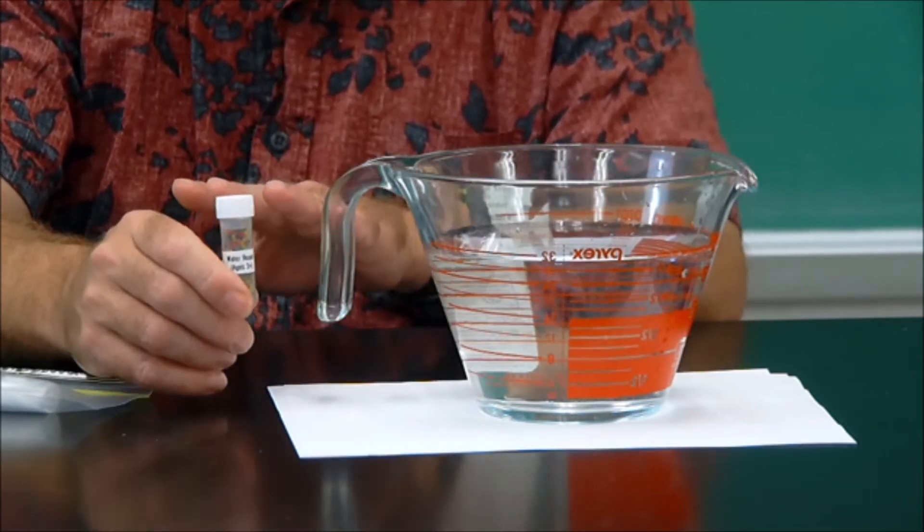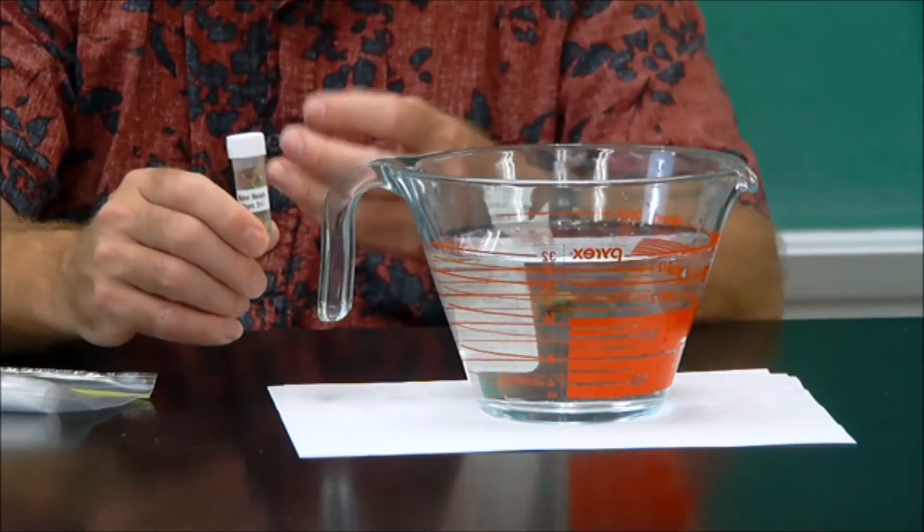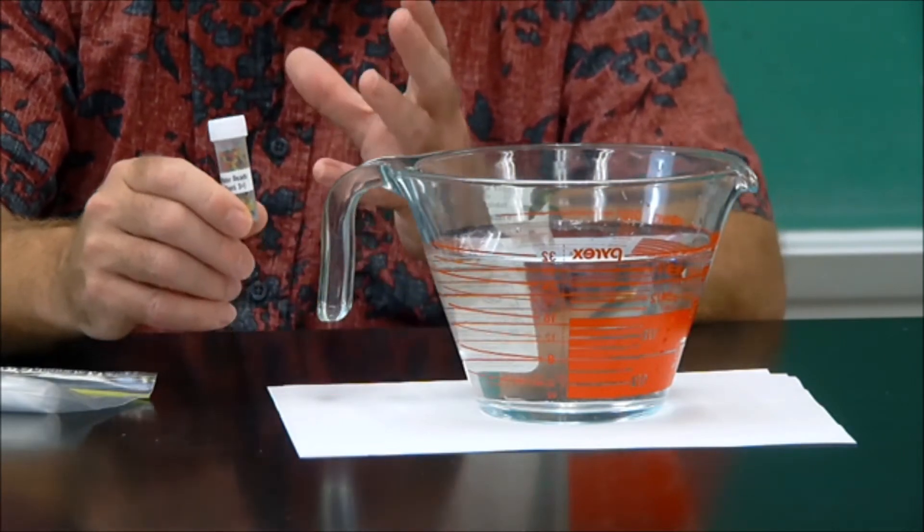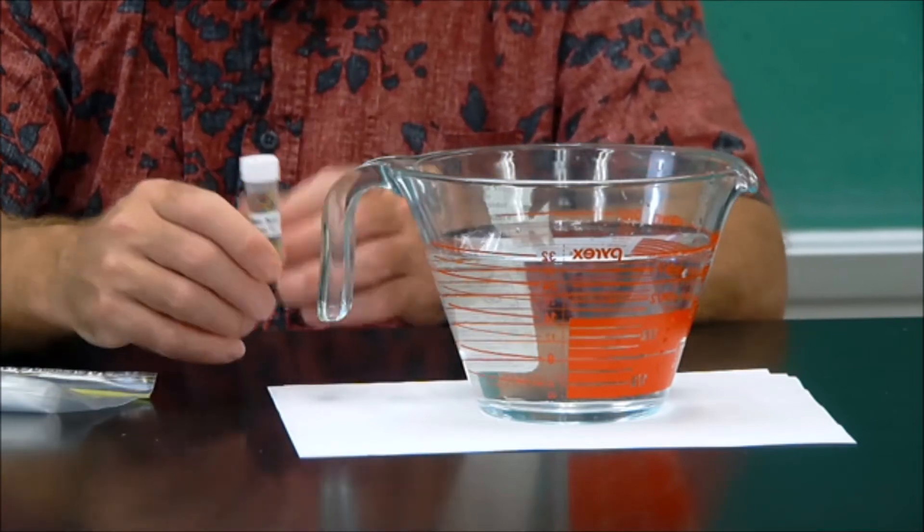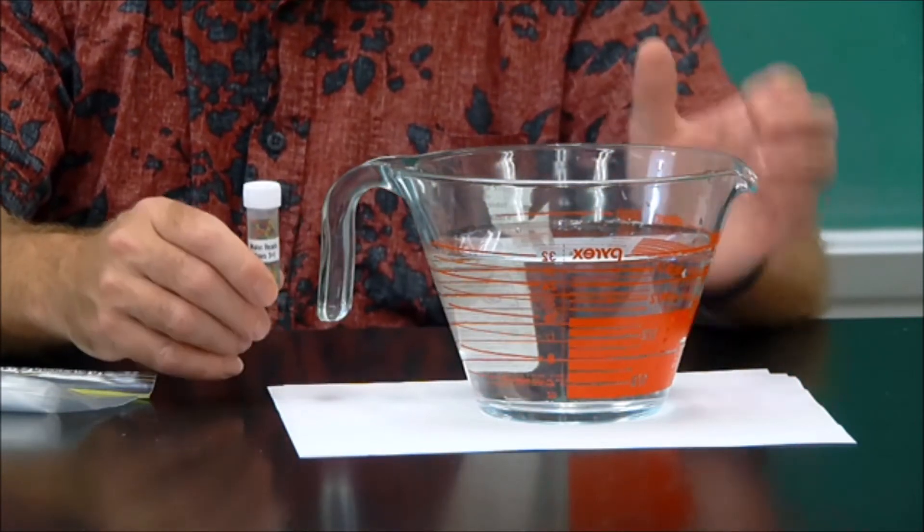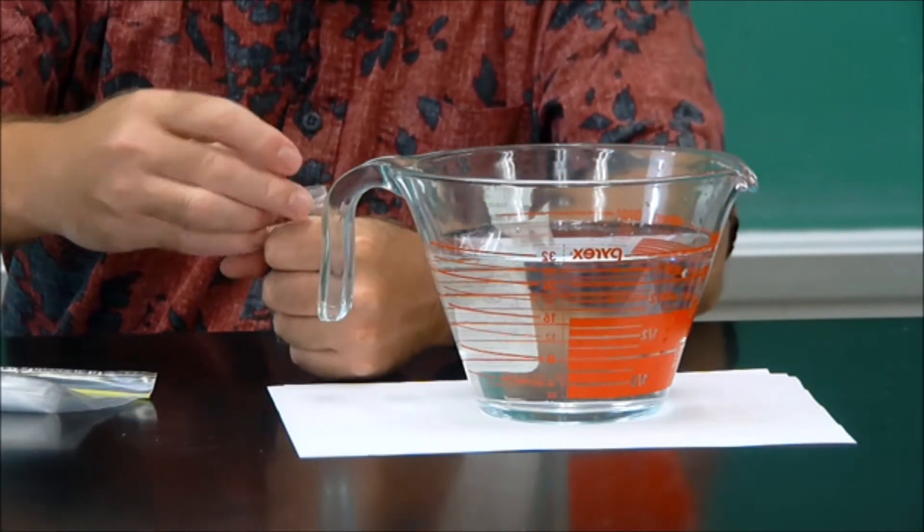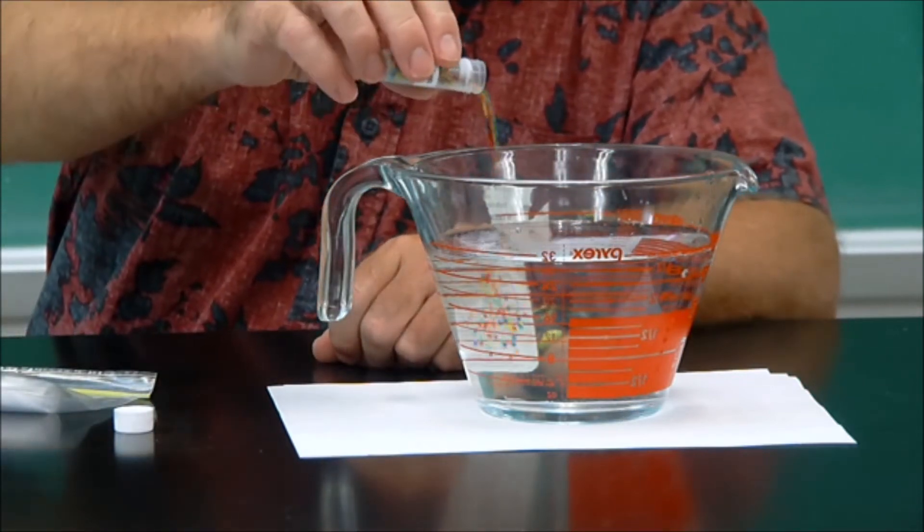And what we're going to do is we're going to add them to this larger container of water. Now the Orbeez themselves contain lots of solute, in this case a special polymer compound, and that solute is going to suck water to it. Ideally we would do this experiment with distilled water, but good old tap water is fine. So simply remove the top of your container and just pour your Orbeez down into the measuring cup.